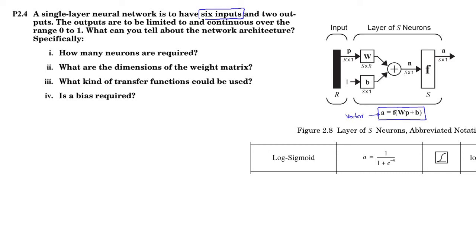So, we have p is given as number of inputs, which is r. P is r input and its dimension r is 6. And we have two outputs. So, therefore, s equals 2.